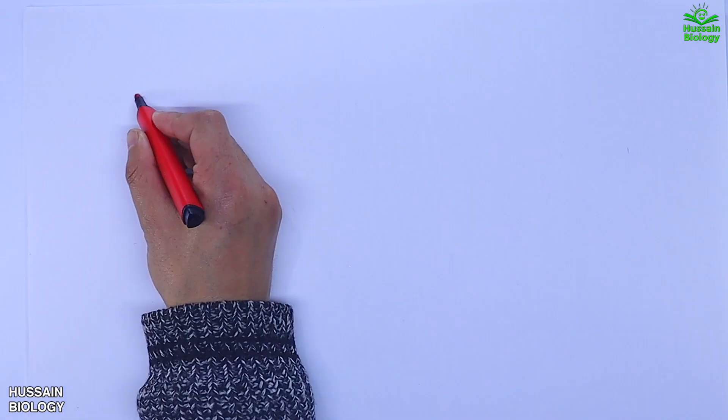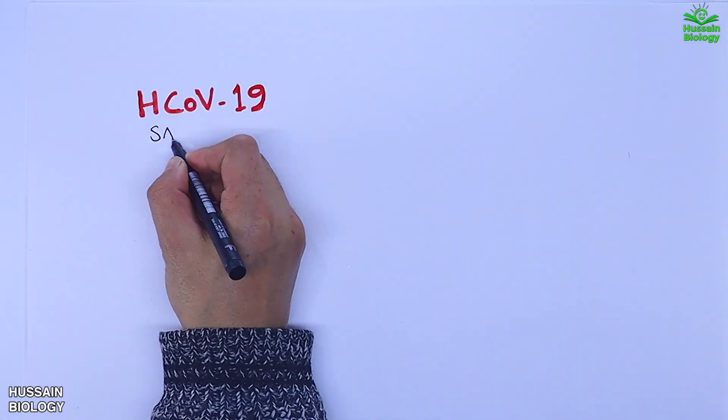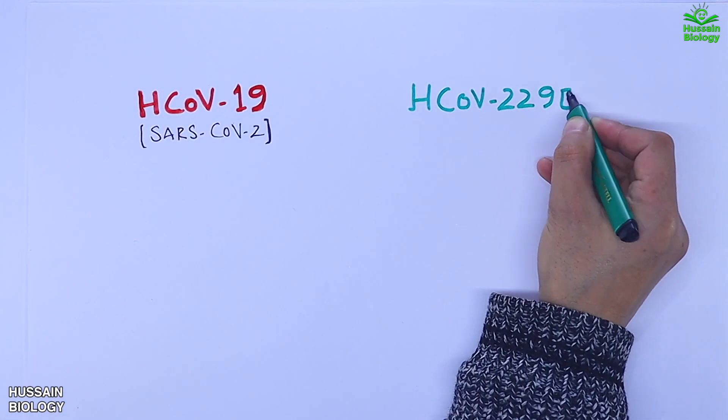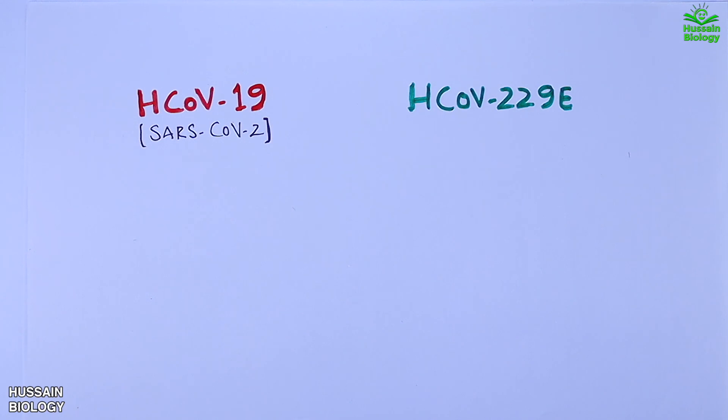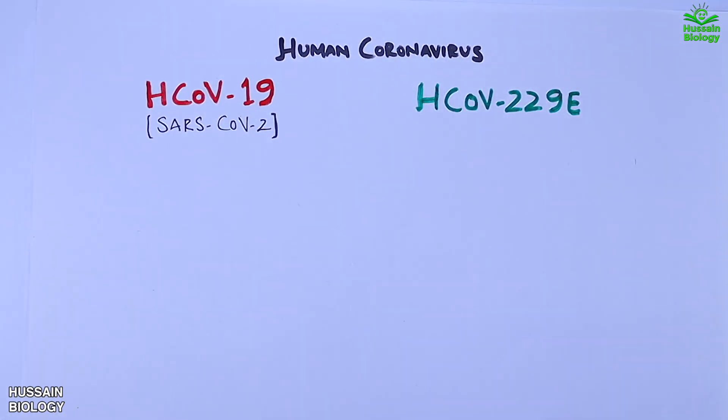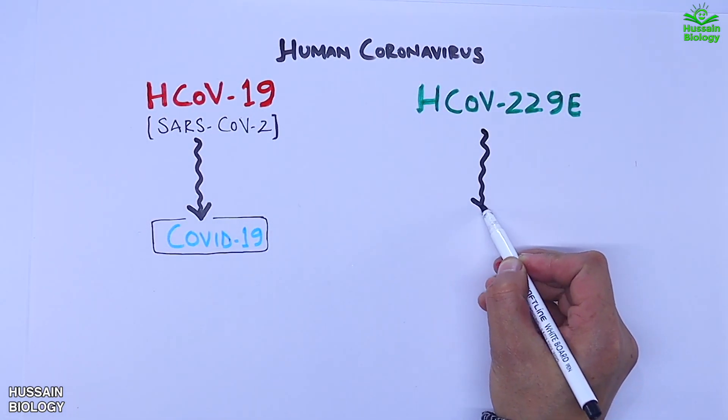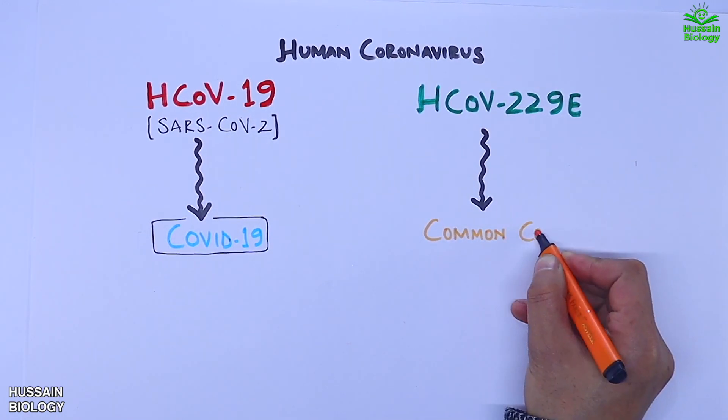Let's get to the basics first. Here on the left we have the HCOV-19 reported as SARS-CoV-2, and on the other hand we have the HCOV-229E virus. Both are human coronavirus. The left one, which is the SARS-CoV-2, causes COVID-19, whereas the right one, HCOV-229E virus, causes the common cold.